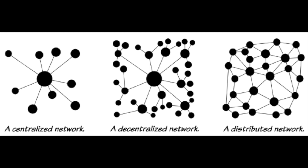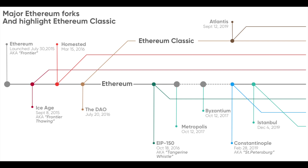Public blockchains are completely independent. If the organization that started it ceases to exist, the blockchain will still be able to run as long as there are still computers connected to it. A prime example of this is Ethereum Classic. When Ethereum hard-forked, many people still wanted to use the old Ethereum network, and thus it is still running today.